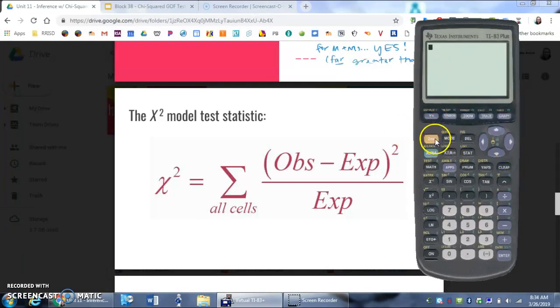And then, where the sum feature is found is second stat, math, and it's under there. If you ever forget where something is in your calculator, you know there's a sum feature, but you don't remember where it is. Remember, you always have the option of going to second zero, which is your catalog, and you can just look through every single option that's in your calculator.